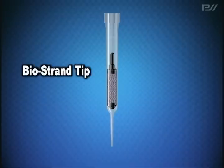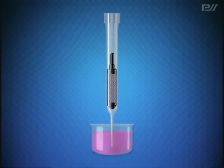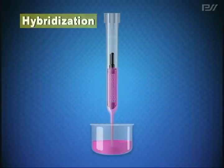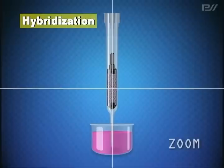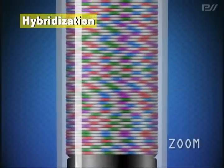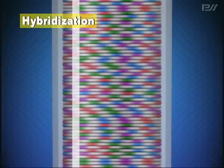This device is called a biostrand tip. Analysis of the sample is done by hybridizing reagents to the contents in the tip. By using the biostrand tip, the amount of samples fixed to the thread can now be easily adjusted.